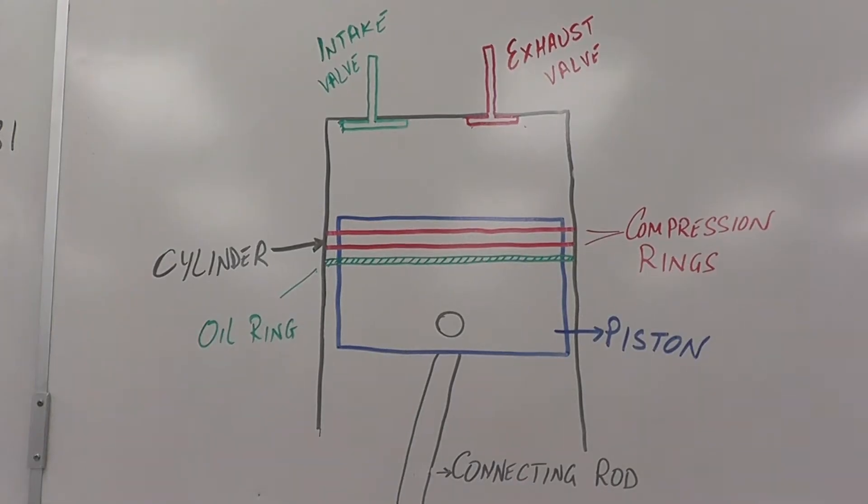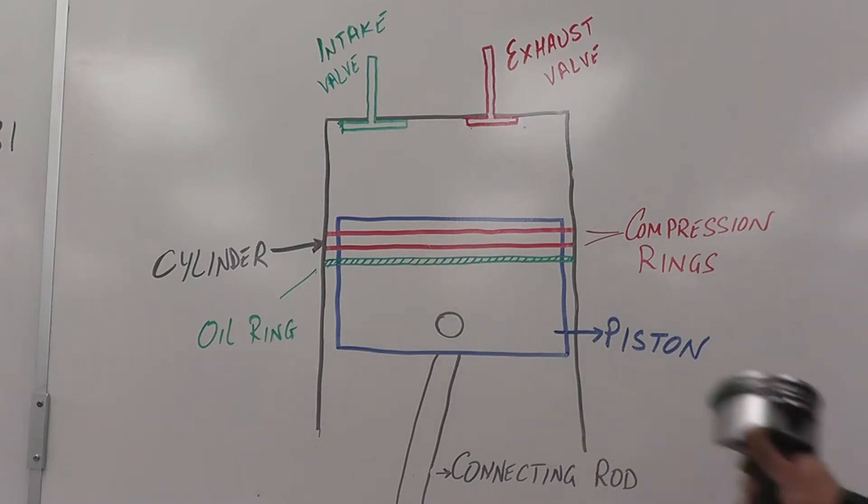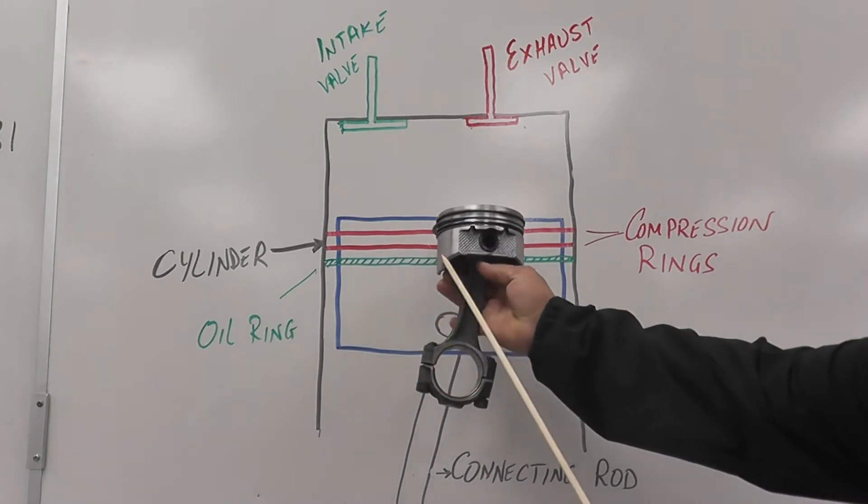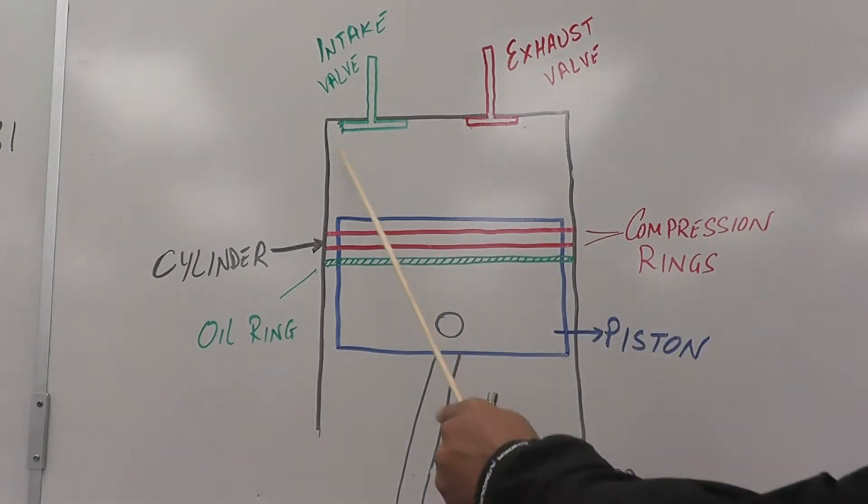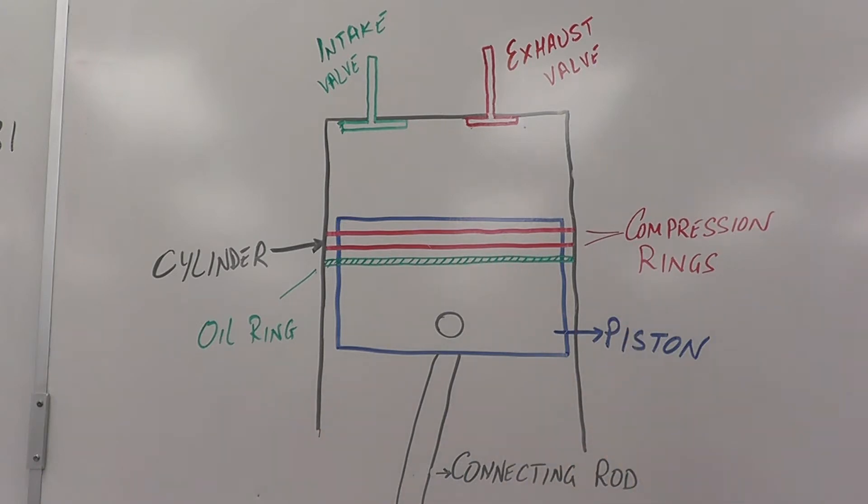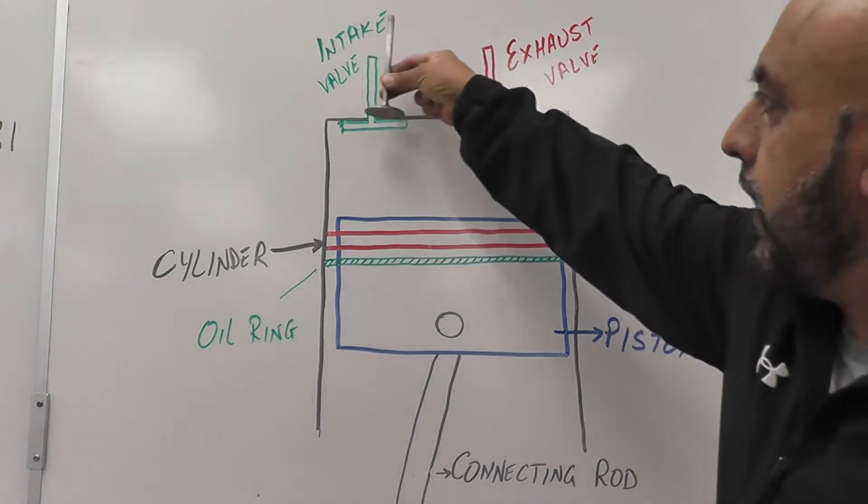Just to go over some parts, we have our piston right here with three rings, compression rings. The top two are compression rings. Actually, the second one is also called a wipe ring when the piston is coming down, and the third one is the oil ring. So here's the piston, here's your connecting rod, and then you have a cylinder, and then you have valves. You have exhaust valve and intake valve.